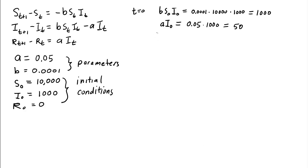Now we can plug these values into the equations for the change. So S1 minus S0, when T is equal to 0, is negative B times S sub T, I sub T. So it's negative 1,000.